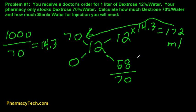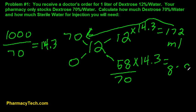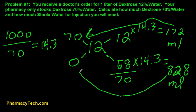We're going to do the same with 58. We're going to multiply 58 times 14.3, and that gives us 828. Rounding off, and that's in mils — this is going to be our volume of sterile water for injection.